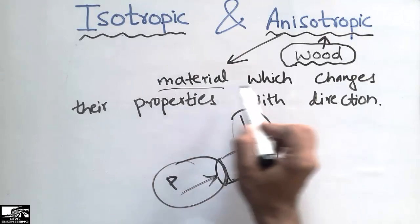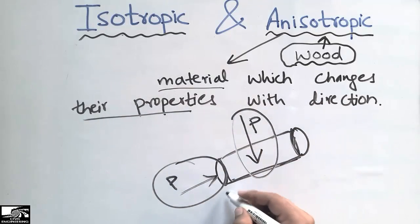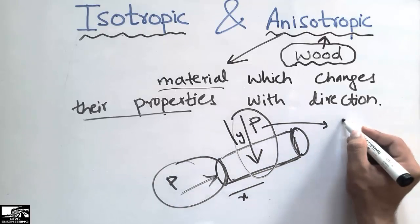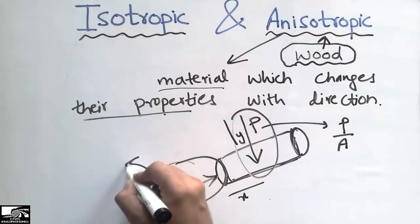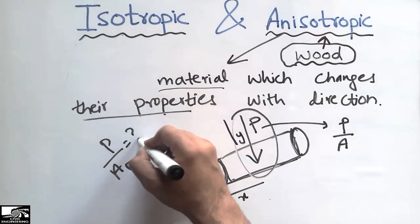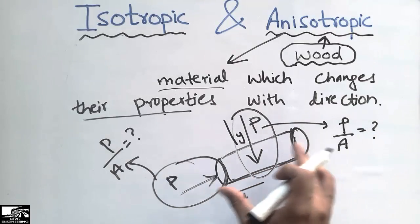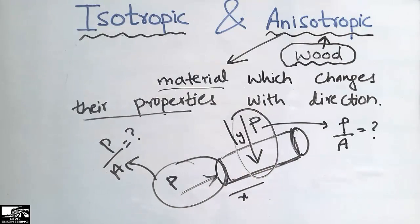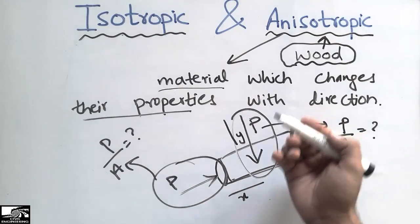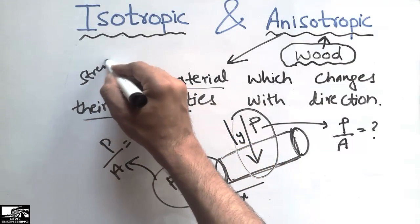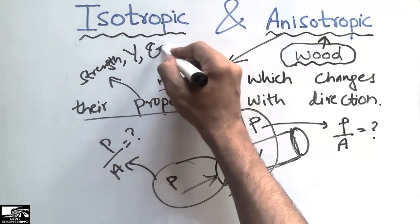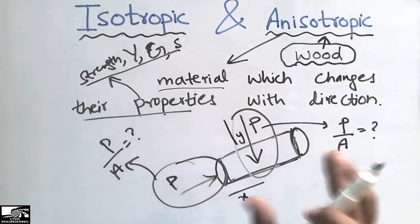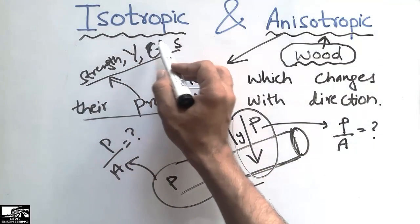The material which changes properties with direction — for example, load applied in the horizontal direction versus the vertical direction — will show different stress values (P divided by A). That is why wood is treated as an anisotropic material, because its properties are not the same in all directions. Properties like strength, Young's modulus, shear modulus, strain, and stress all change with direction. This was today's topic about the difference between isotropic and anisotropic materials.